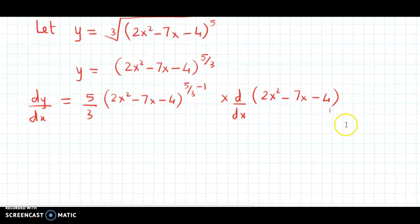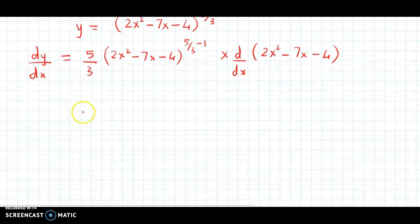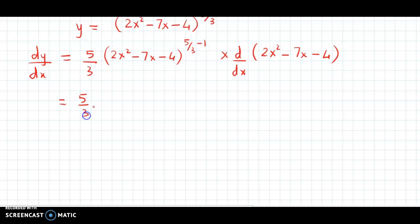The next step is 5 by 3 times 2x squared minus 7x minus 4. 5 minus 3 is 2, so this is 2 by 3. Now for the individual derivatives: